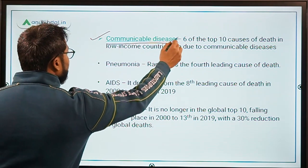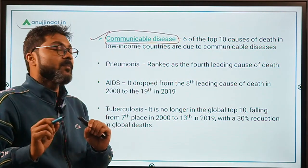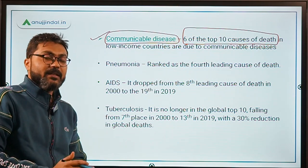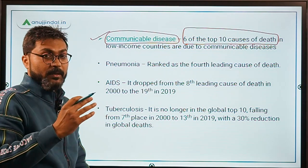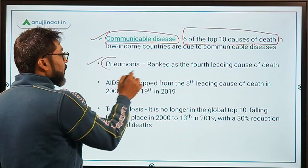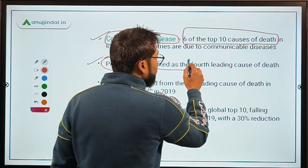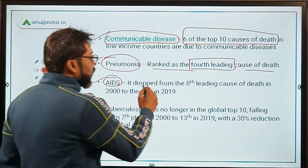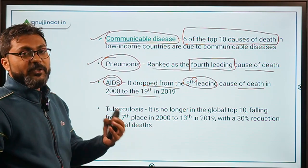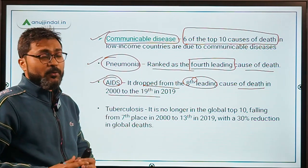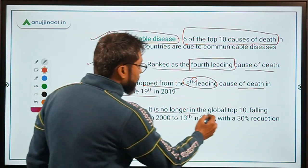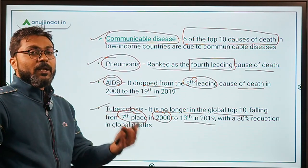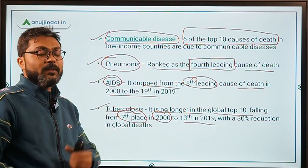This report also talks about communicable diseases. In low-income countries, 6 of the top 10 causes of death are communicable diseases. Pneumonia is ranked as the 4th leading cause of death in low-income countries and globally. AIDS dropped from the 8th leading cause of death in 2000 to the 19th, showing the world is making progress against AIDS. Tuberculosis is no longer in the global top 10, falling from 7th place in 2000 to 30th in 2019, indicating good progress in controlling TB.